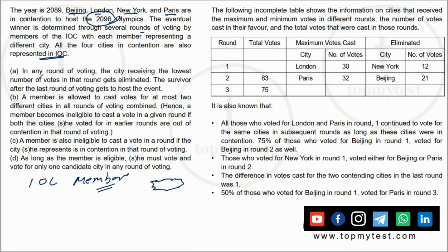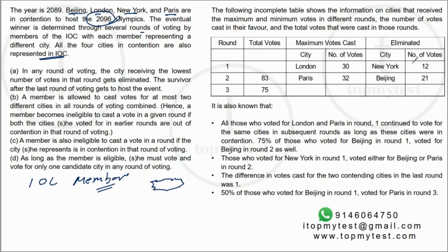The table tells us the maximum and minimum votes cast in each round. New York got 12 votes in the first round and got eliminated. Beijing got eliminated at the end of the second round. So in the final third round, only London and Paris remain. After three rounds, three cities are eliminated, leaving one city to host the event.